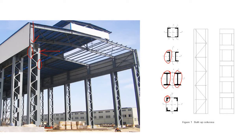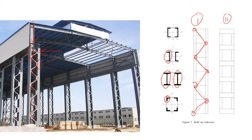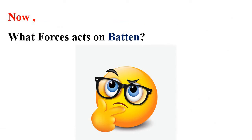Once you have used two sections to form a single column, the next step is to connect them. There are two ways: first, you can use lacing, where all joints are pin joints and you essentially form a truss. The second option is to use a plate — riveted or welded with the main section — and this plate is known as a batten.